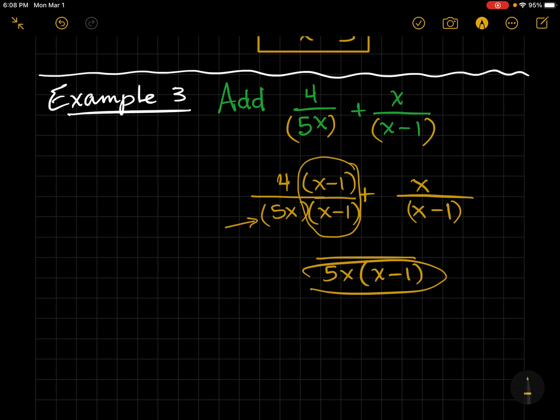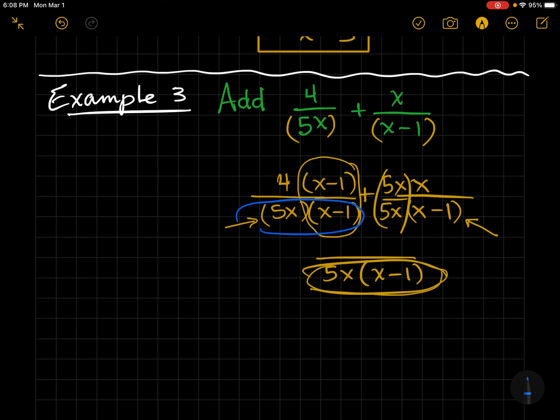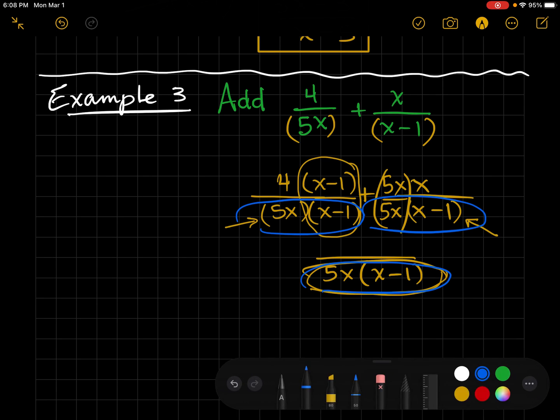Now, I ask myself, when I compare this denominator to the new common denominator, what am I missing? Well, I'm missing 5x on the top and bottom. And now, if you look, all the denominators match. Thus, I have my common denominator.